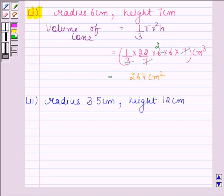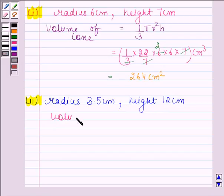In the second part we are given radius as 3.5 cm and height as 12 cm. We know the value of r and h so we can easily find volume of cone. We know that volume of cone is equal to 1/3 πr²h.